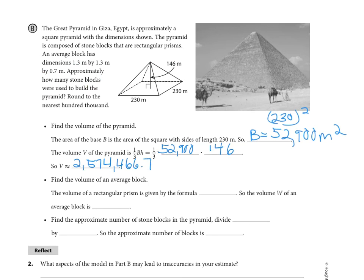Then the volume of an average block, since it's a rectangular prism, our formula is volume equals length times width times height. So the volume W of an average block is going to be, if we multiply those three dimension values there, 1.183 cubic meters. Then we're going to divide the total volume by the volume of just one block. So divide V by W, and the approximate number of blocks is 2,200,000. Whoa, that's a lot.